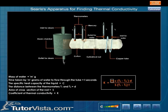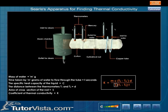In this formula, c is the specific heat capacity of water, d is the distance between the thermometers, and s is the area of the cross-section of the rod.